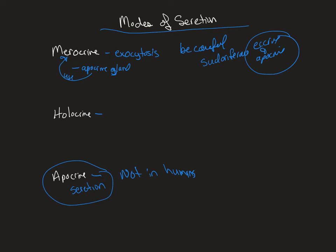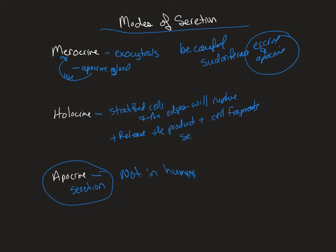Holocrine mode of secretion is basically where you're going to need stratified cells. The edges, when they secrete, will rupture, so that the product secreted is both what was made but also cell fragments. Basically, it releases the product plus cell fragments. The most famous example of this is going to be your sebaceous gland.